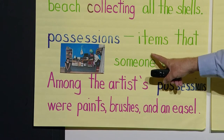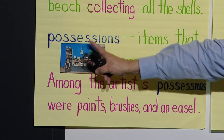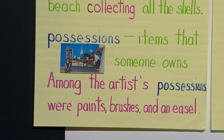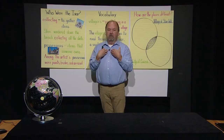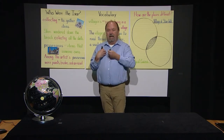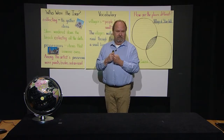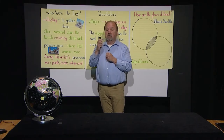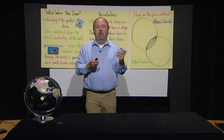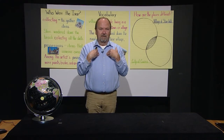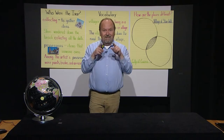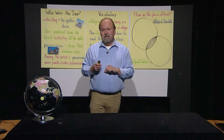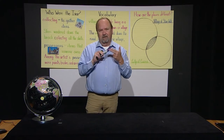We will also look at this word today: possessions. Possessions is a noun — we use this word to represent a thing. Possessions are things that someone owns. For example, among the artist's possessions were paints, paintbrushes, and an easel. Can you pretend that you are letting someone know that what is in your hand belongs to you? Point to your hand and then point to yourself. If something is your possession, who does it belong to? Yes, it belongs to you. This marker is my possession. It belongs to me.